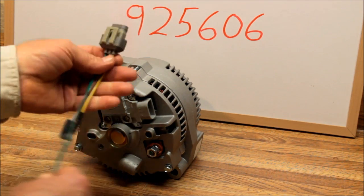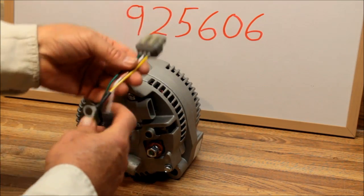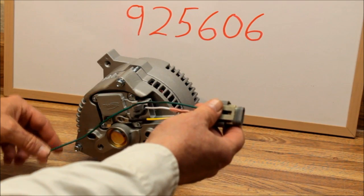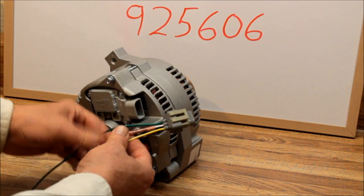The other thing that is offered - because if you're going from the external regulated unit to the internal regulated, you need the wiring harness. We've got our part number 925606 combo wire plug. In the description below, I'm going to have a link to both the 3G series alternator and this combo plug.